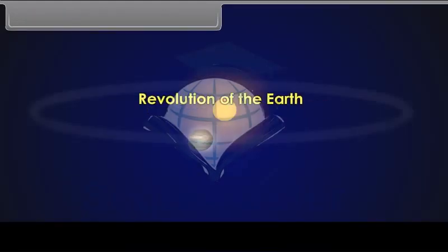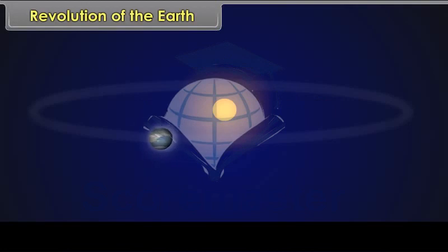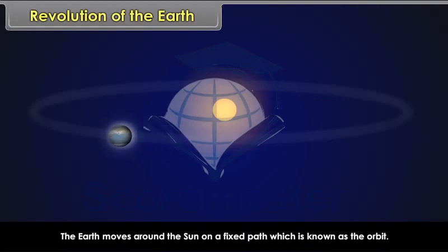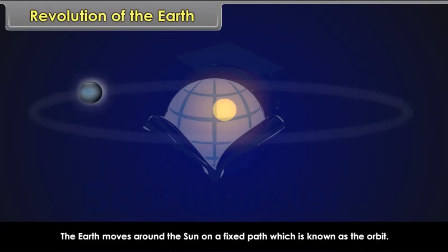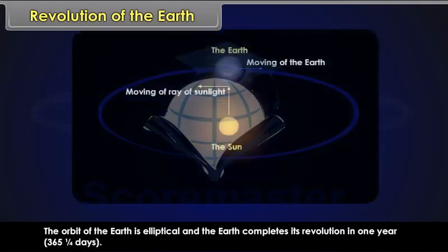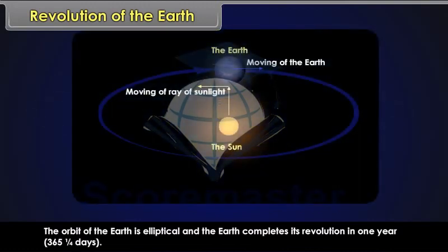Revolution of the Earth. The earth moves around the sun on a fixed path, which is known as the orbit. The orbit of the earth is elliptical and the earth completes its revolution in one year — 365 and one-fourth days.